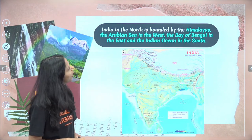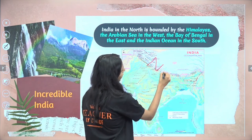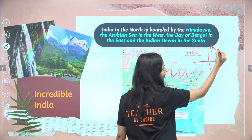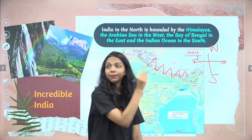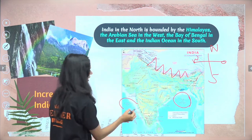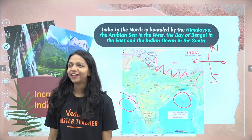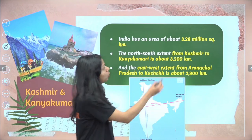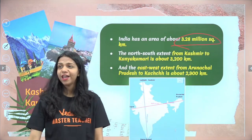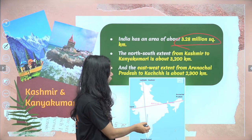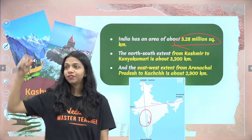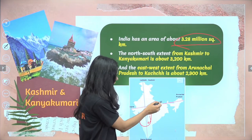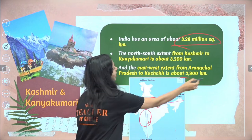India is in the north bounded by the Himalayas. In the east you have the Bay of Bengal, and in the west you have the Arabian Sea. India has an area of about 3.28 million square kilometers. From north to south, we are 3,200 kilometers from the northernmost tip in Jammu and Kashmir to the southernmost tip in Kanyakumari. From east to west, from Surat to Andhra Pradesh, we are about 2,900 kilometers.